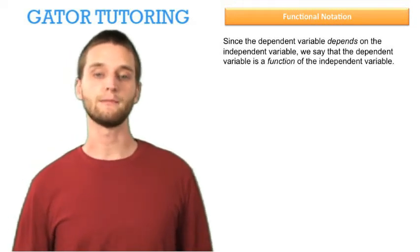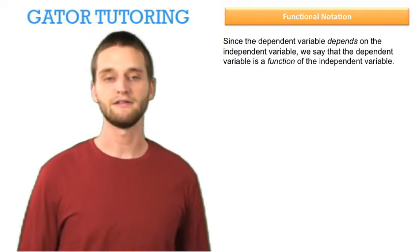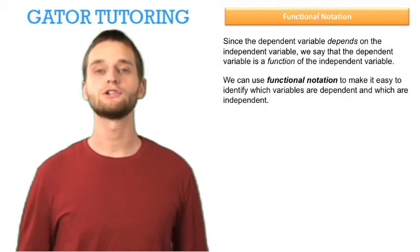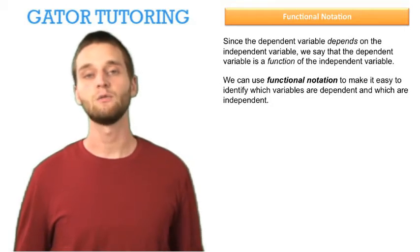Since the dependent variable depends on the independent variable, we say that the dependent variable is a function of the independent variable. We can use functional notation to make it easy to identify which variables are dependent and which are independent.